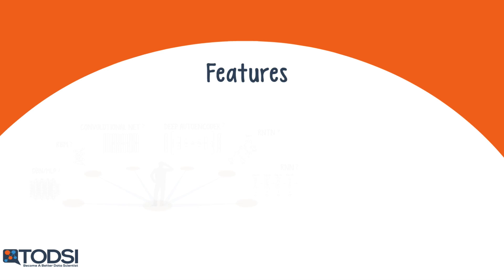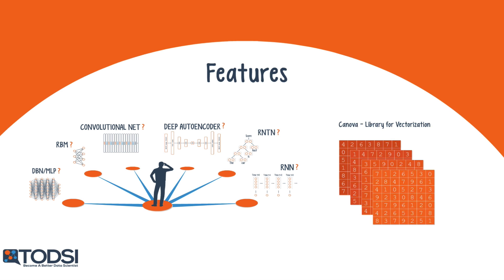DL4J supports all of the deep nets we've seen up to this point: the RBM, DBN, Convolutional Net, Recurrent Net, RNTN, Autoencoders, and even the Vanilla MLP. DL4J also includes a vectorization library called Canova, which was built by the same team.